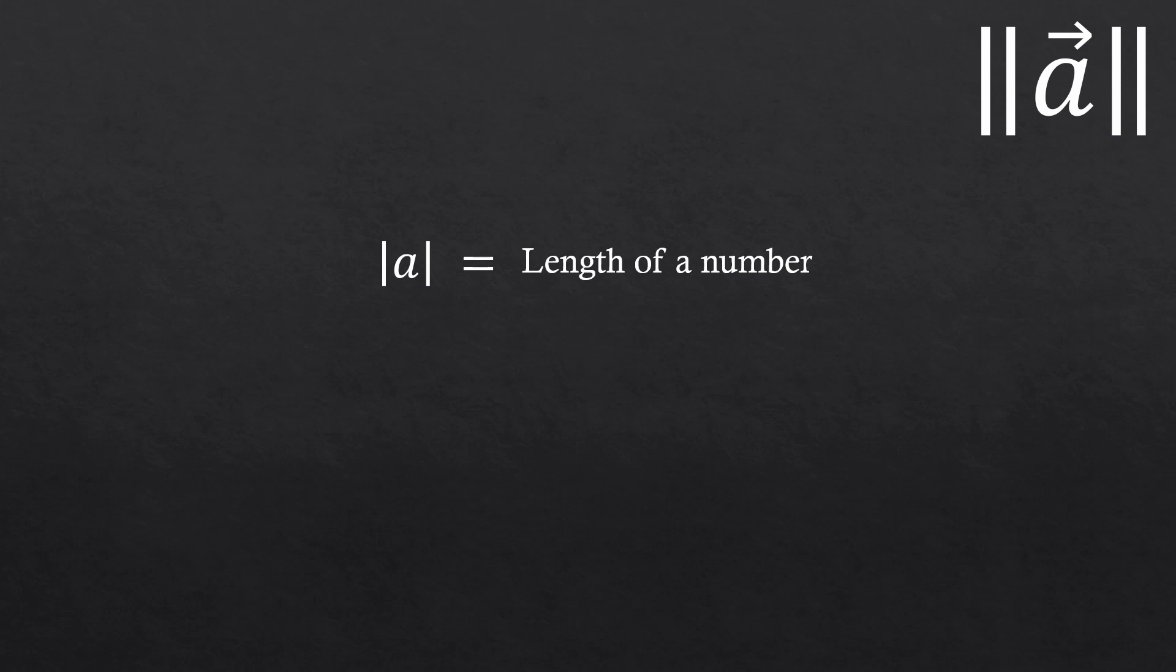Now, we just use the single vertical parenthesis for the length of a number. We use a double vertical parenthesis for the length of a vector. The first one, we call it the absolute value. The second one, we call it a vector norm.